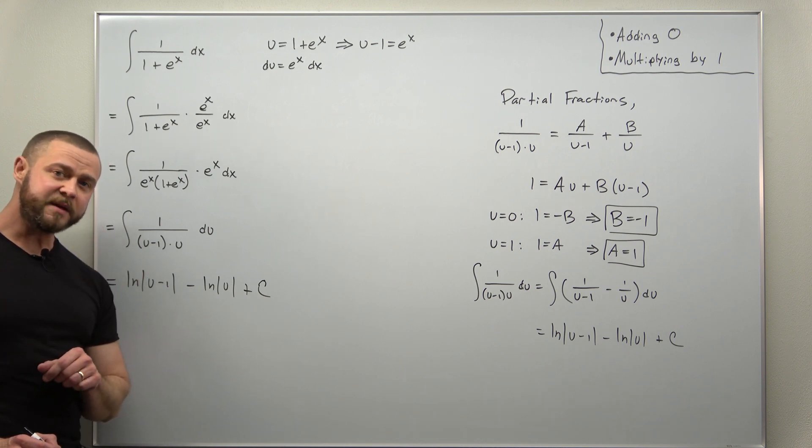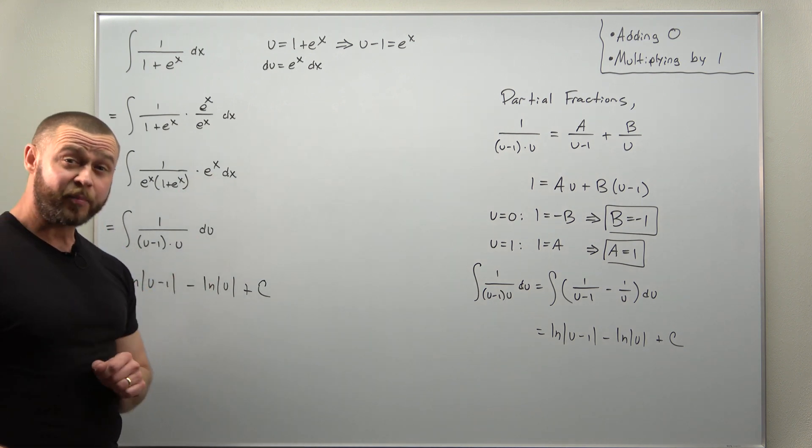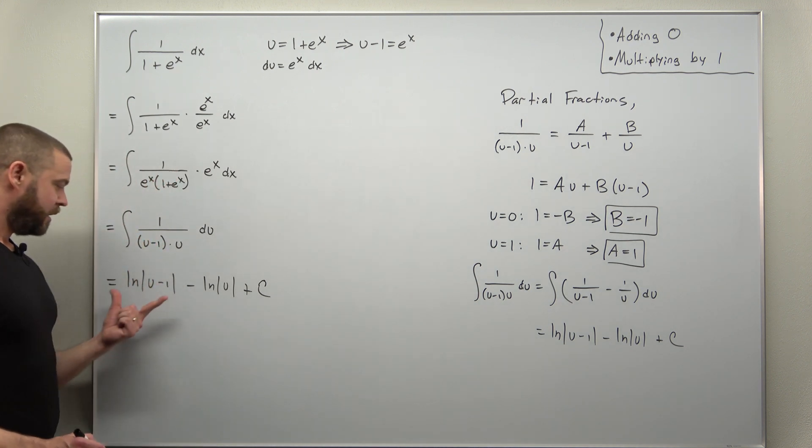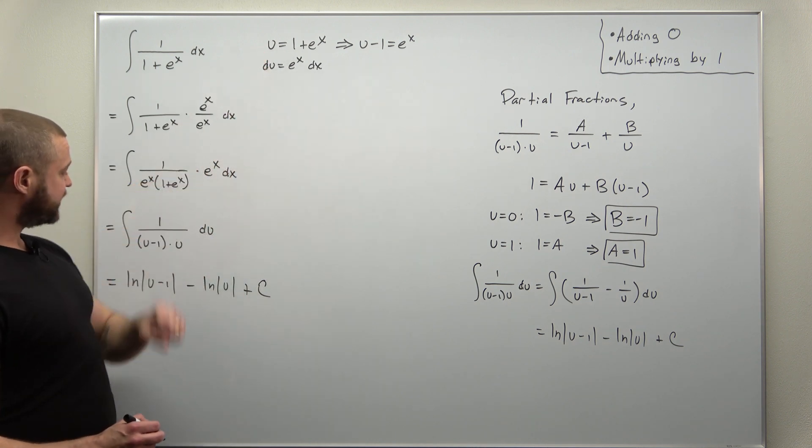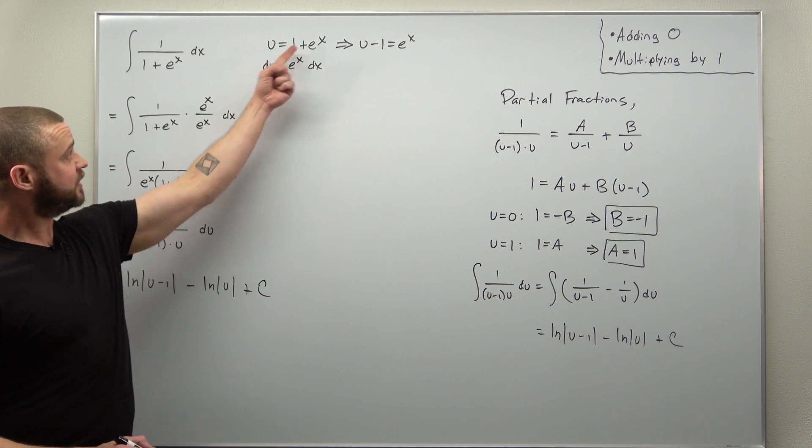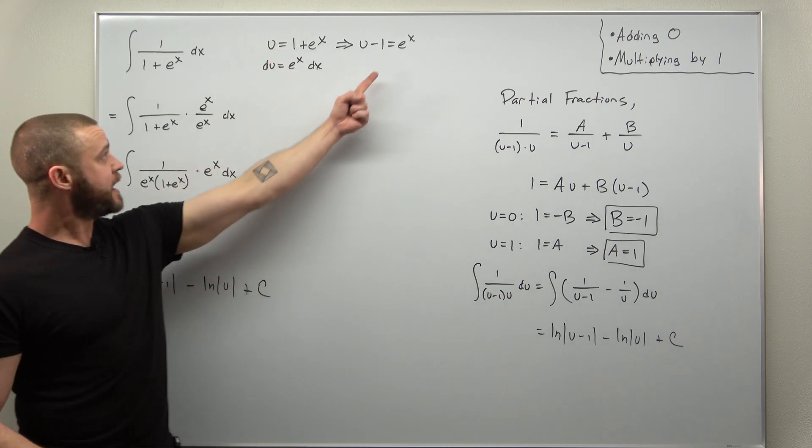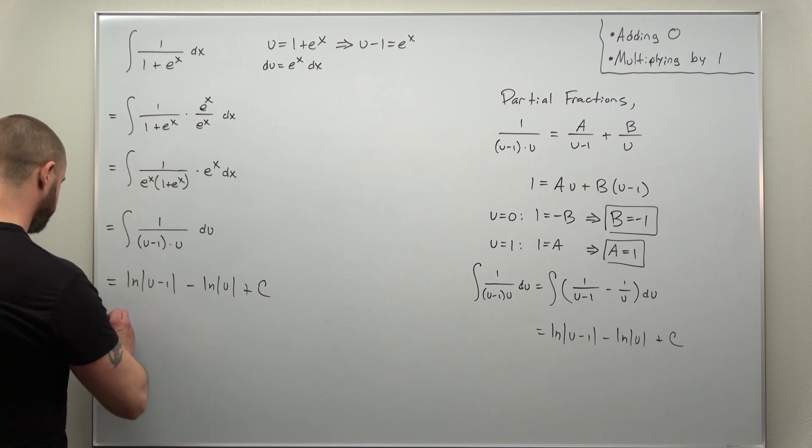And now we just have to be careful. We should get the same answer as what we did when we approach this using the trick of adding zero. We just have to make use of our substitutions. So when we back-substitute here, u here is going to become 1 plus e to the x, but u minus one that'll become e to the x. And if you plug that in here...